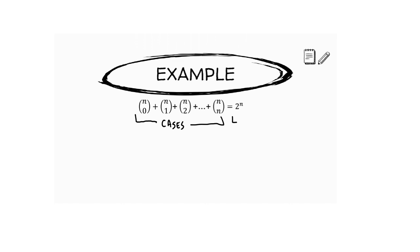Meanwhile, on the right-hand side, this is a different method of counting where we think of each topping as a yes or no choice. You could say yes, I want pepperoni; no, I don't want mushrooms — on and on down the line until you've answered a yes or no question about every single topping offered. And since these both count the same number of things, the left-hand side of this equation must be equal to the right-hand side.